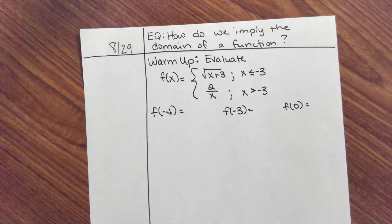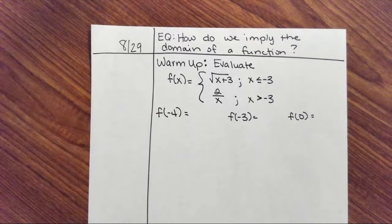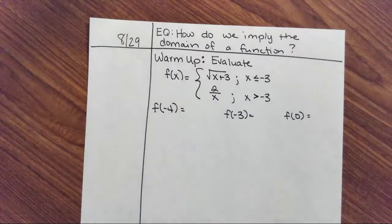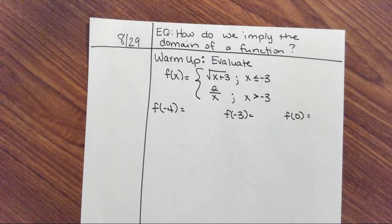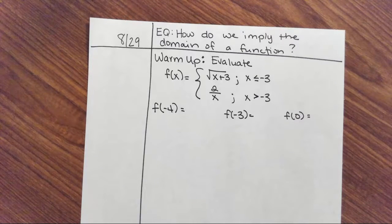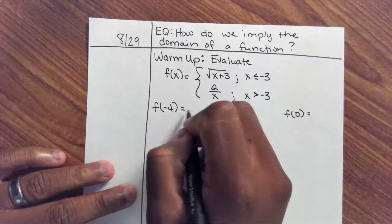Let's evaluate this piecewise function. When you're evaluating a piecewise function, you're looking at the x value and trying to find out which function it's defined for. We have the square root of x plus 3 — defined when x is less than or equal to negative 3 — and 2 over x, defined when x is greater than negative 3. So f(-4) uses the first function. Plugging in negative 4 gives the square root of negative 1, which is undefined in the real number system.